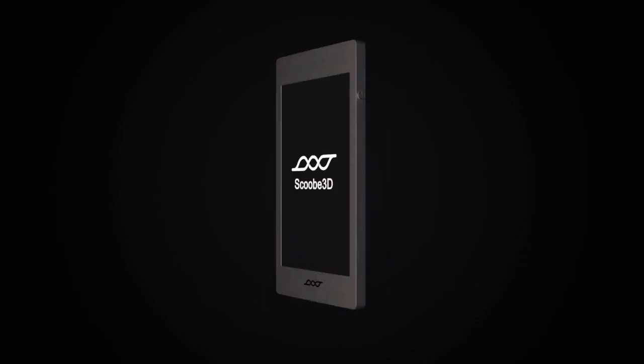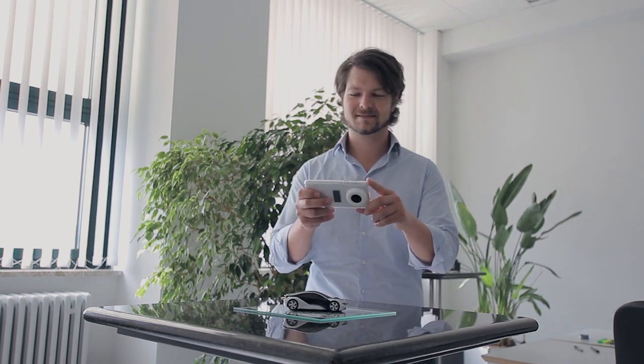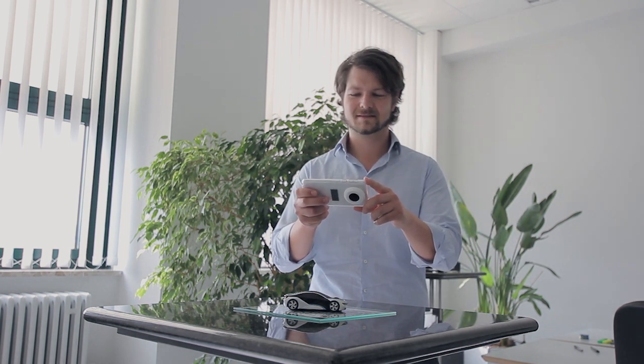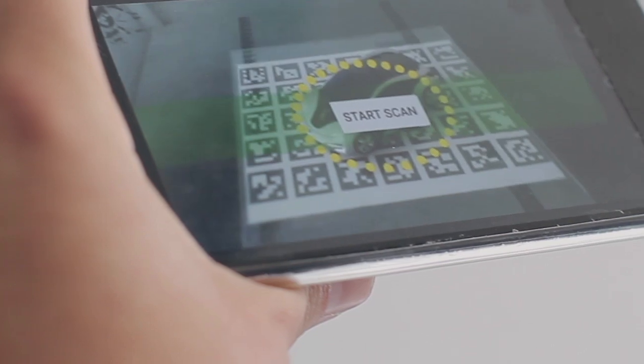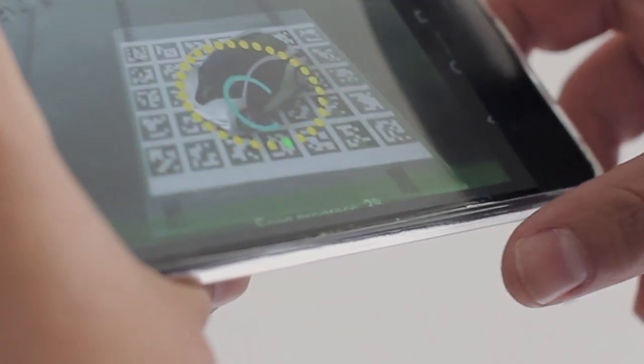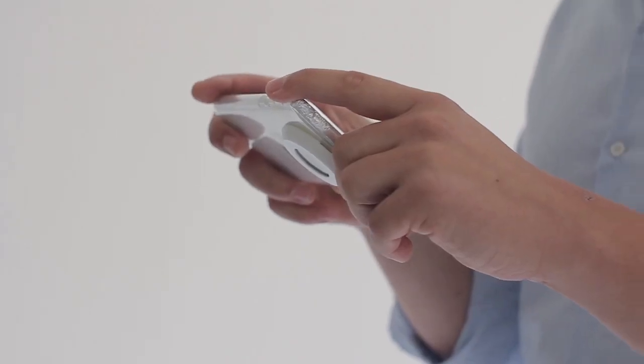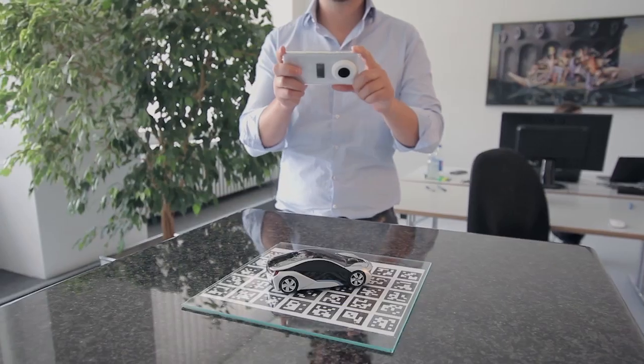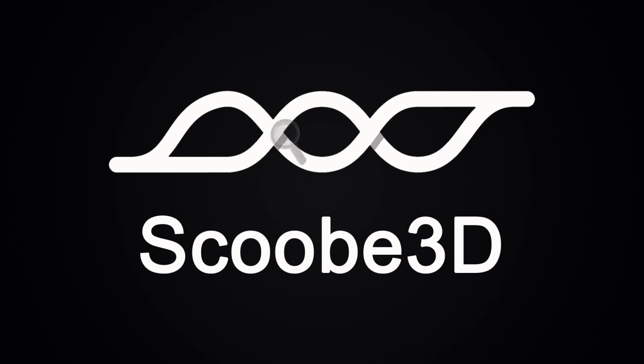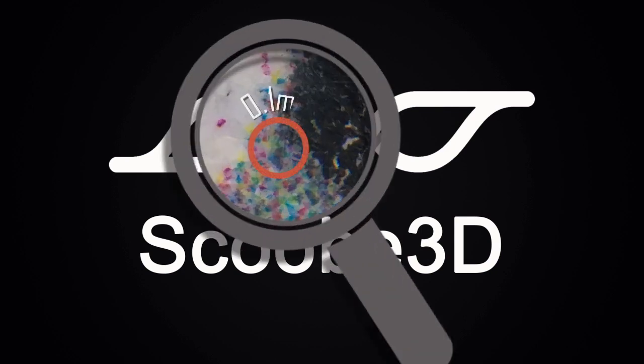This is how the SCOOB3D works. Focus your SCOOB3D on the object, just like you would when taking a regular picture. Press Start Scan and follow the easy on-screen instructions while panning the object with your SCOOB3D. This way, you can capture the whole object and get an optimal scan result with an accuracy of up to 0.1 mm or 0.003 inches.